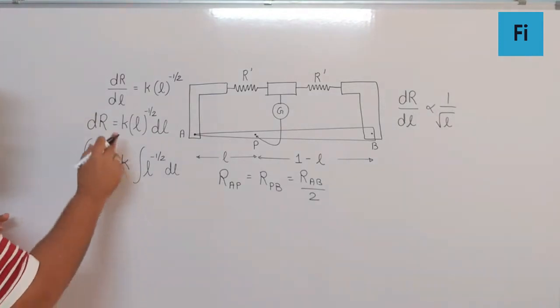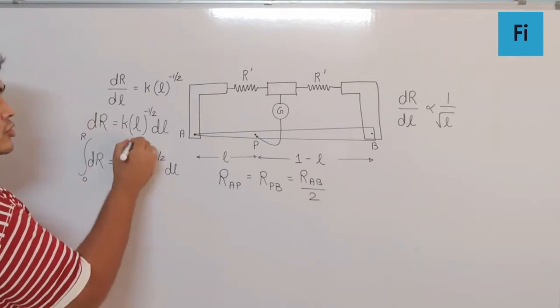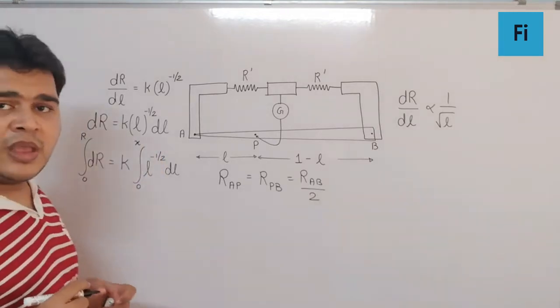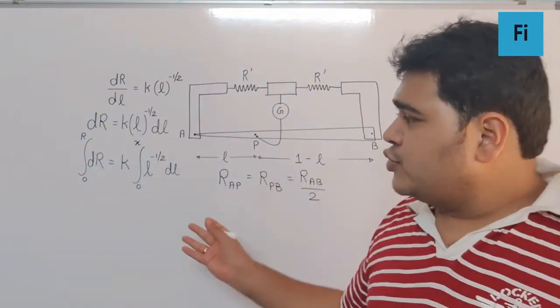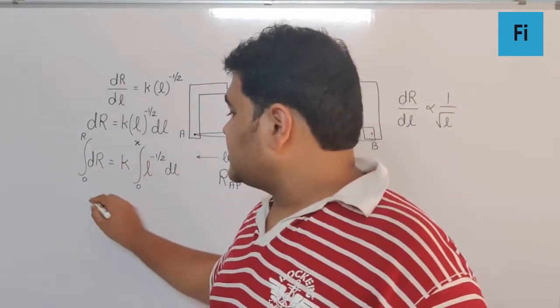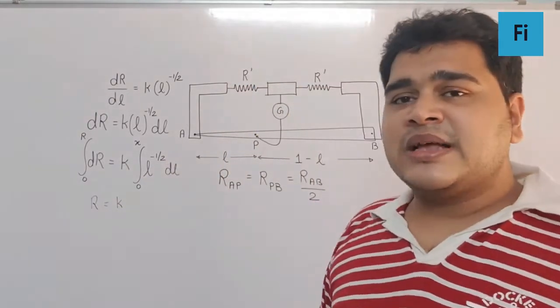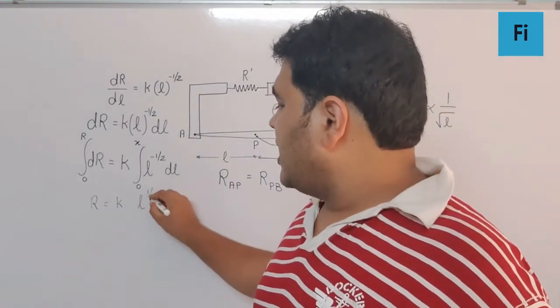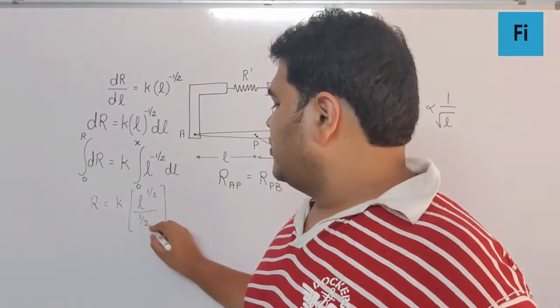If I do that, I get the resistance R = k[L^(1/2)/(1/2)], where the limit will go from 0 to x. This half in the denominator becomes 2 in the numerator, and L^(1/2) is root L.